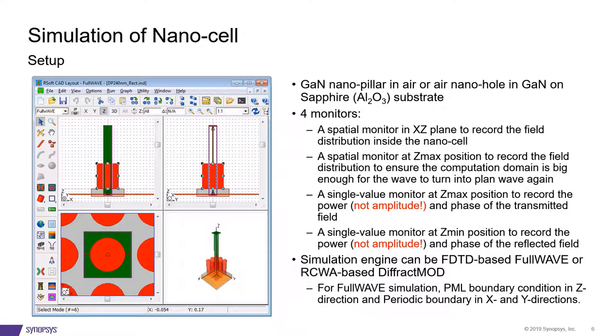Let's see how to simulate a nano cell. In this slide, you can see an example of a nano cell with a rectangular lattice. In this example, we set up four monitors: a spatial monitor to record the field distribution inside the nano cell, then a spatial monitor at the end of the nano cell to record the field distribution. We make this to make sure the computation domain is big enough for the input wave to go forward and get reflected. A single value monitor is put at the end just to record the power, not the amplitude, because the amplitude can be bigger than one, and also to check the phase of the transmitted field. Another single value monitor is put at the beginning to record the power and phase of the reflected field.